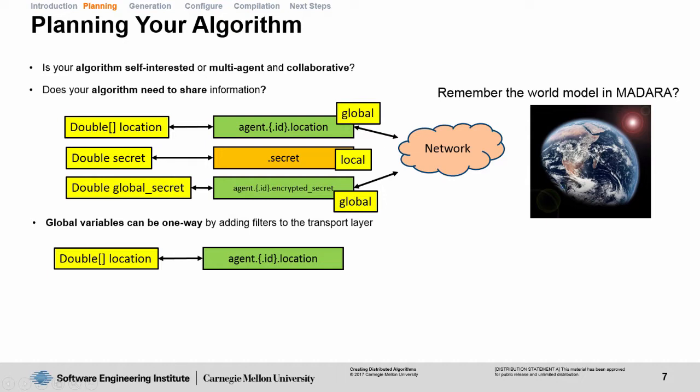If we wanted to change the way global variables are being shared over the network, we could add an on-receive filter on this agent location that causes it to drop that information before being applied to the knowledge base.